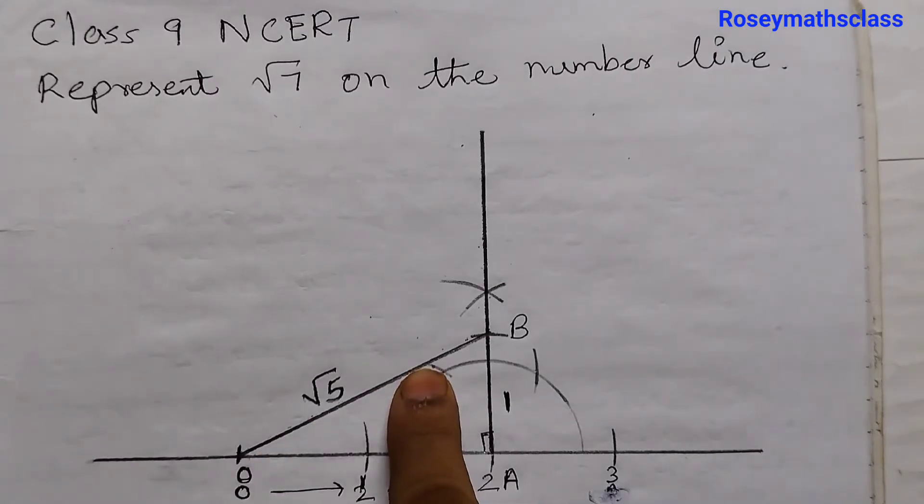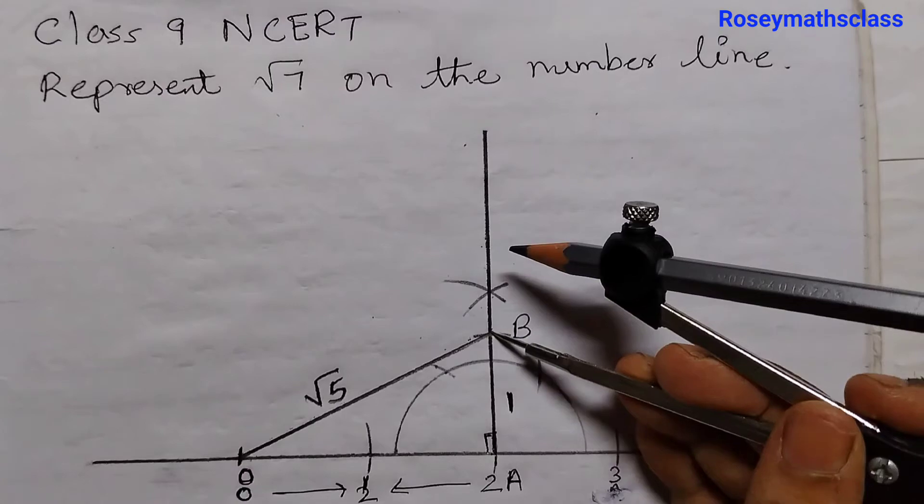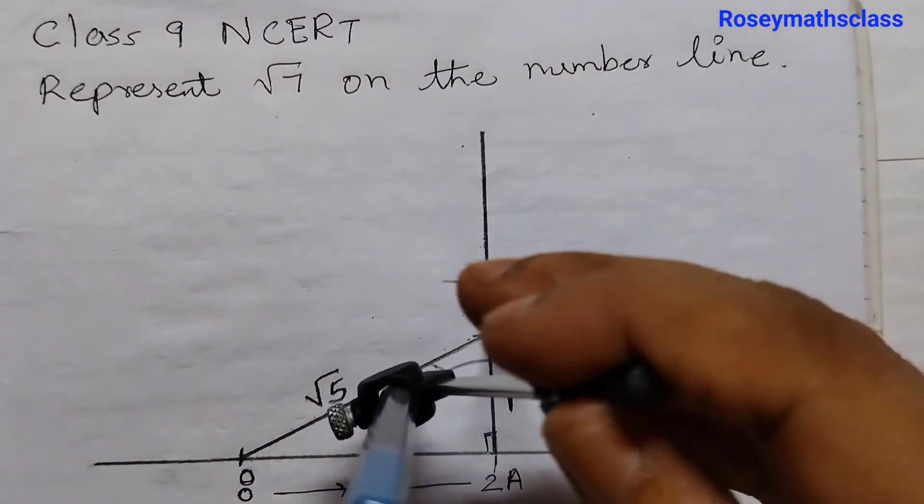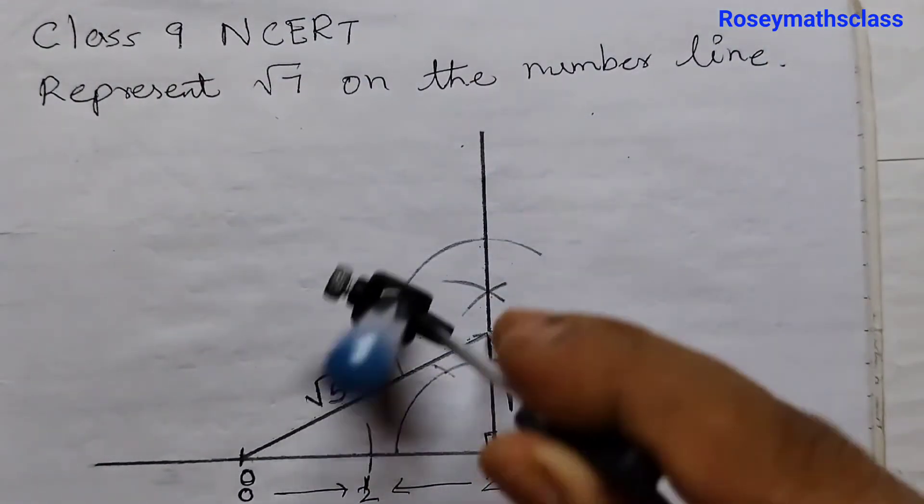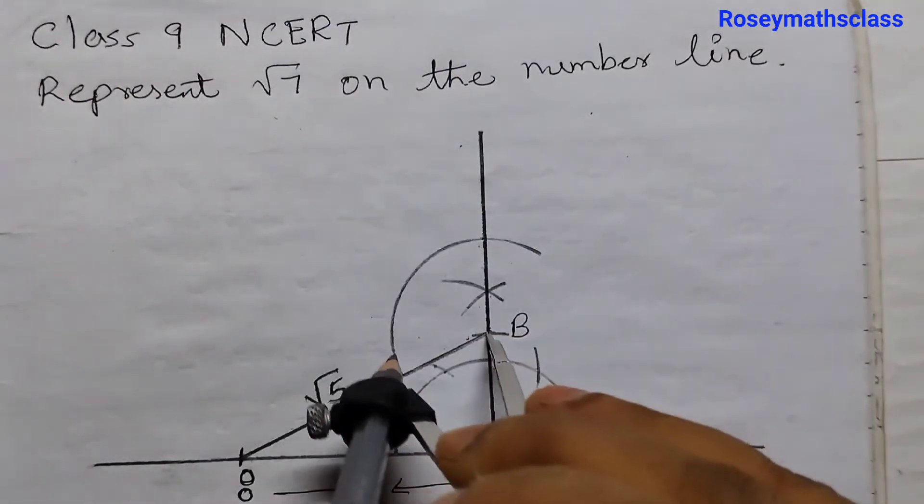Now using this as the base, we will draw square root of 6. Keep the metal point here at B. Same way, draw a perpendicular how you did previously. So we don't need a complete semicircle. This much is sufficient.